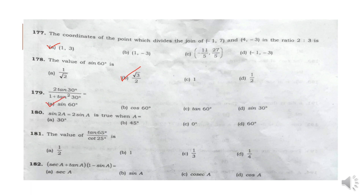Question 180: sin twice A is equal to twice sin A is true when A is equal to Option C: 0 degrees.